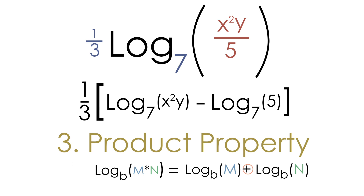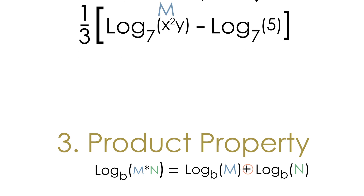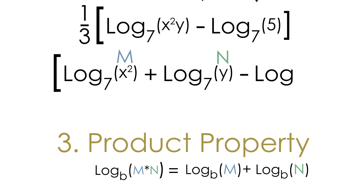Notice in our first log we have x squared being multiplied by y, so we can use the product property. The x squared term is our m and the y term is our n. Separating them gives us log base seven of x squared, plus log base seven of y — and we still have log base seven of five being subtracted, all multiplied by one-third.